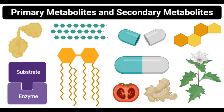Examples of primary metabolites include proteins, enzymes, carbohydrates, lipids, vitamins, ethanol, lactic acid, butanol, etc.